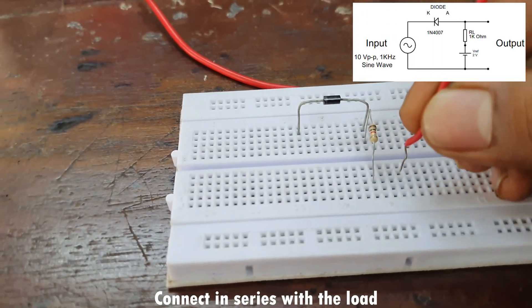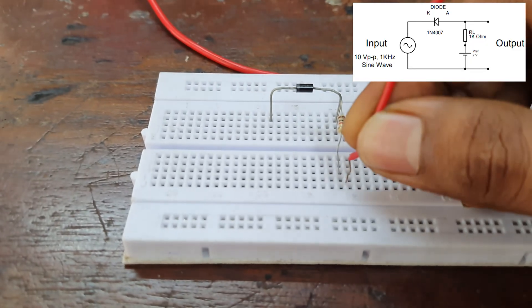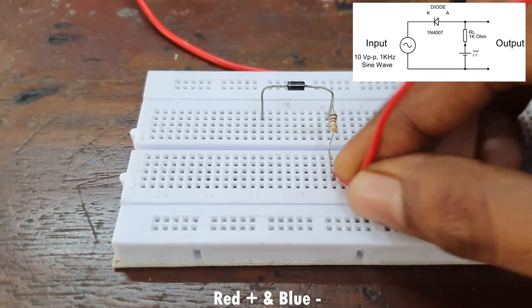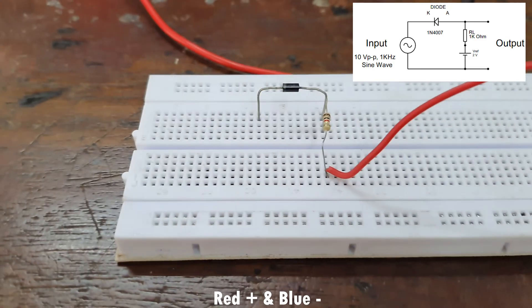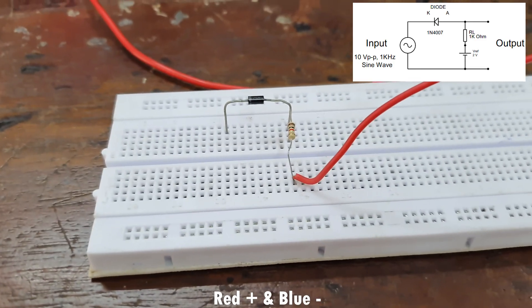Red is the positive terminal of the regulator power supply, and blue is the negative terminal.